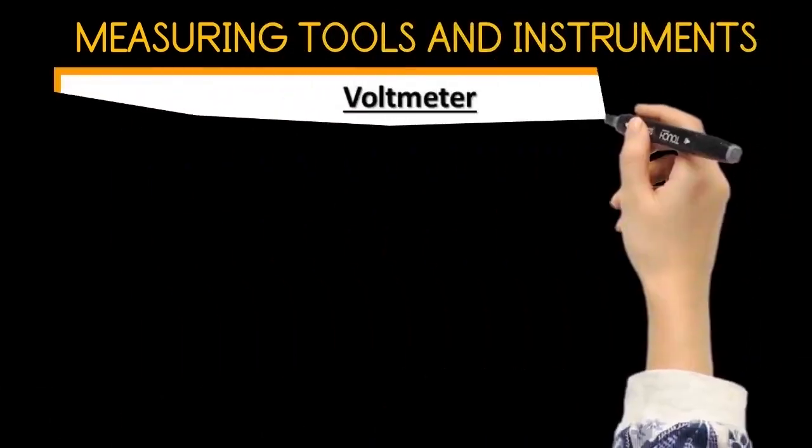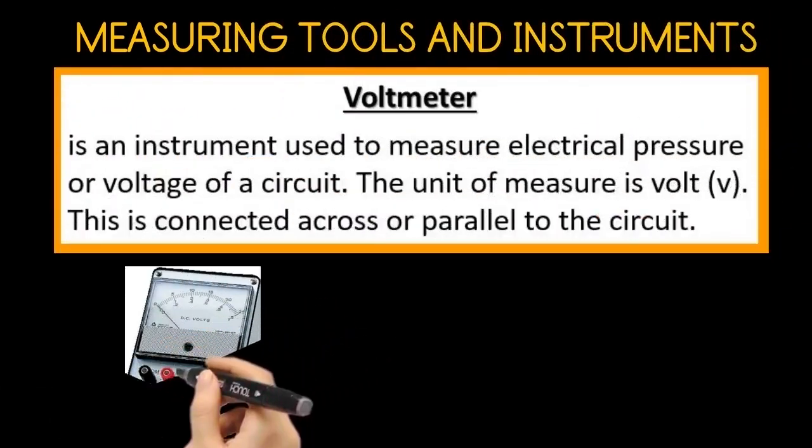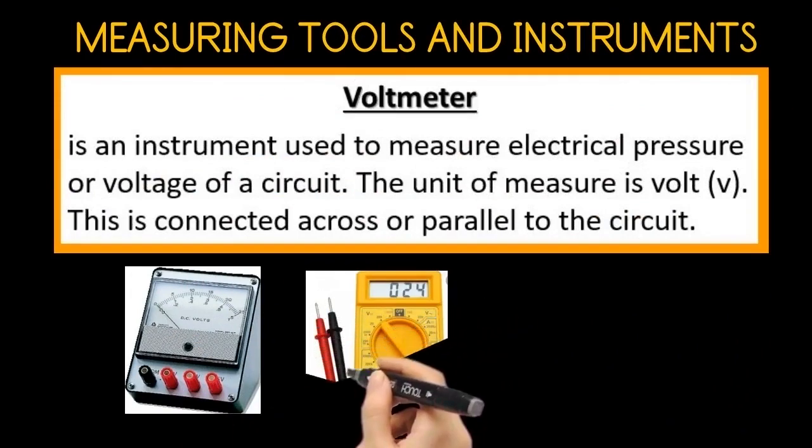The voltmeter. The voltmeter is an instrument used to measure electrical pressure or voltage of a circuit. The unit of measure is volt. This is connected across or parallel to the circuit.